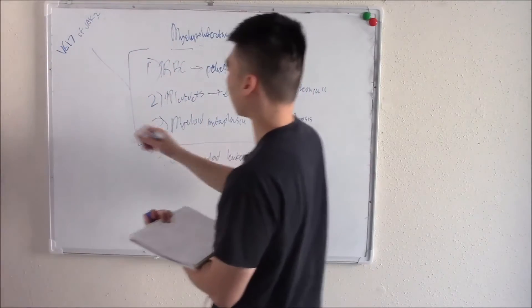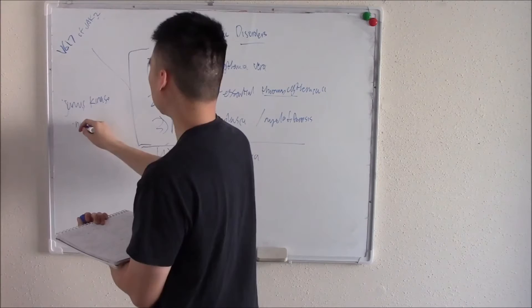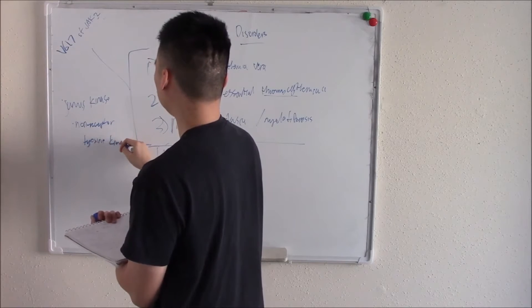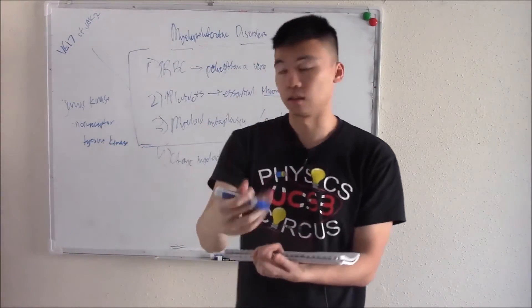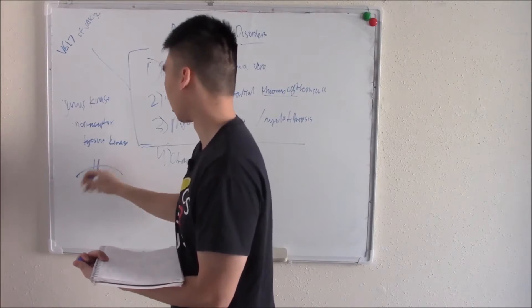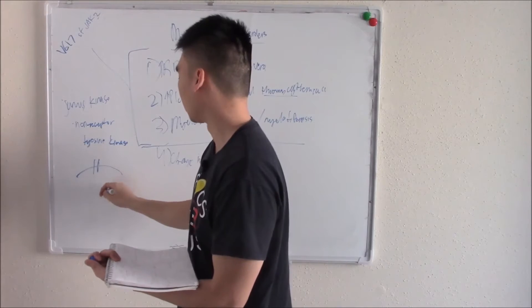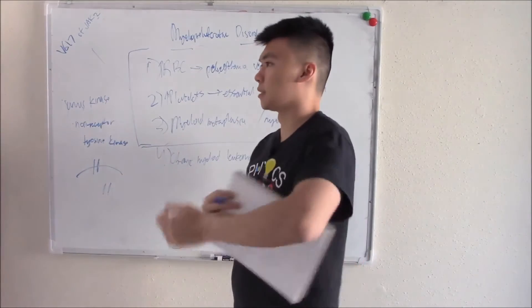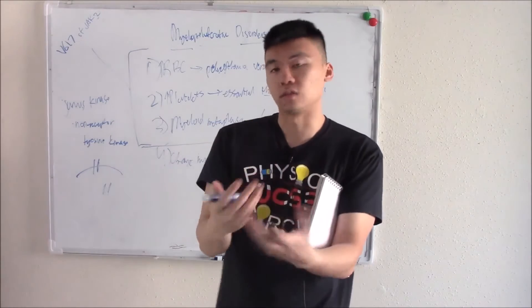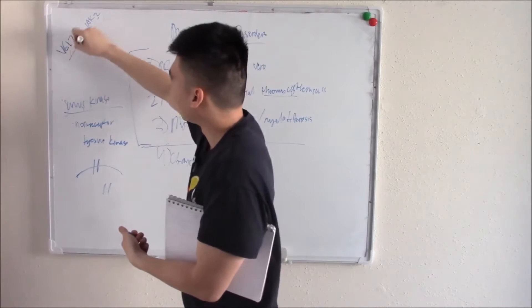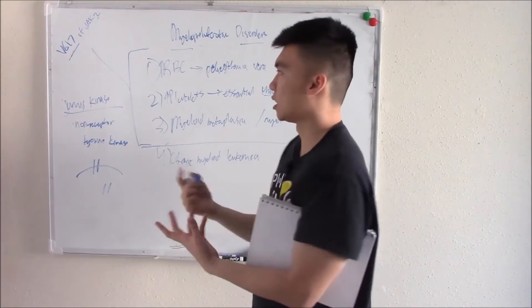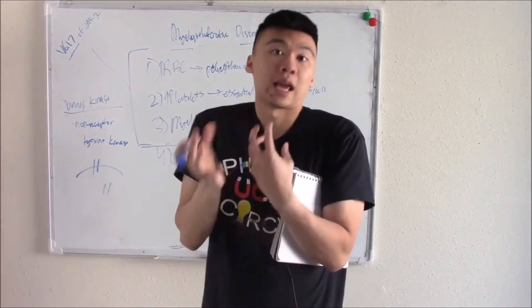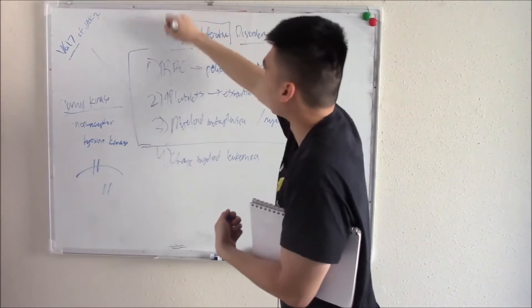JAK, or Janus kinase, is a non-receptor tyrosine kinase. You remember tyrosine kinase helps cell signaling. Non-receptor just means some tyrosine kinases are on the cell surface — those are receptors — and the non-receptor ones are in the cytoplasm. What Janus kinase does is help cell signaling, so it helps cell proliferation. When you have a mutation in that, especially a V617 mutation — meaning at the 617 position of that gene or protein, valine is changed for phenylalanine — your Janus kinase goes haywire and you have abnormal proliferation. That's how you get your myeloproliferative diseases.